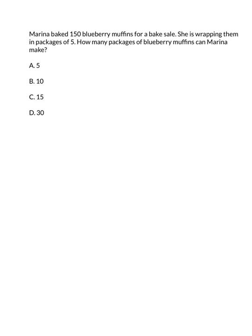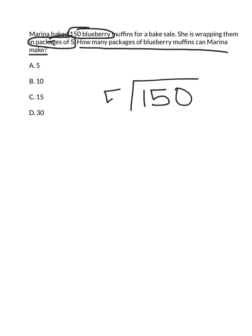Alright, let's take a look at our problem of the day. It says, Marina baked 150 blueberry muffins for a bake sale. She is wrapping them in packages of 5. How many packages of blueberry muffins can Marina make? So the question we need to answer is, how many packages of blueberry muffins can she make? Now we see that she starts off with 150 blueberry muffins. She is wrapping them in equal packages of 5. So that tells me that I need to divide. So my problem then becomes 150 divided by 5. Go ahead and work this problem out. Make sure you record it and bring it with you to class tomorrow, and I will see you then.